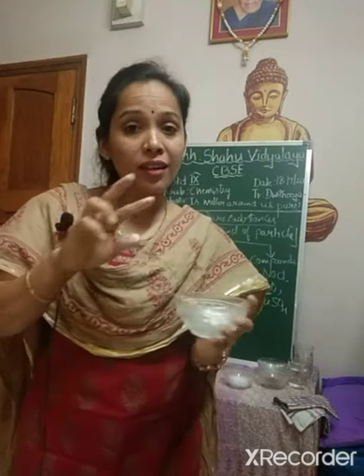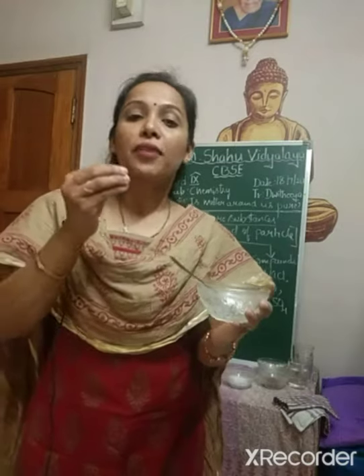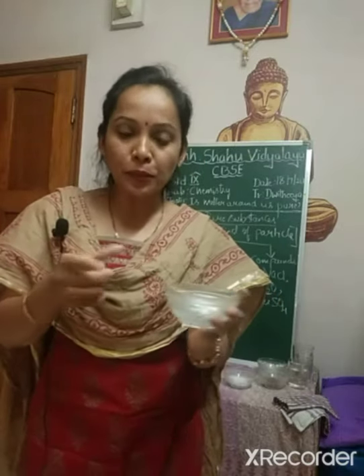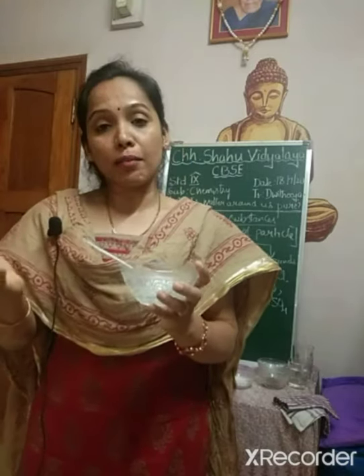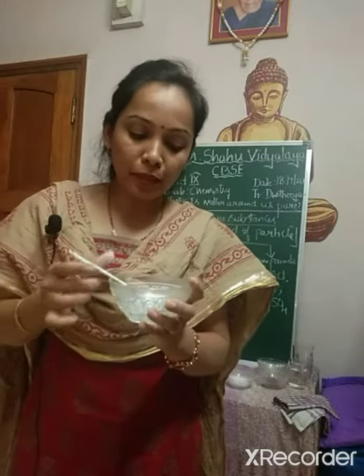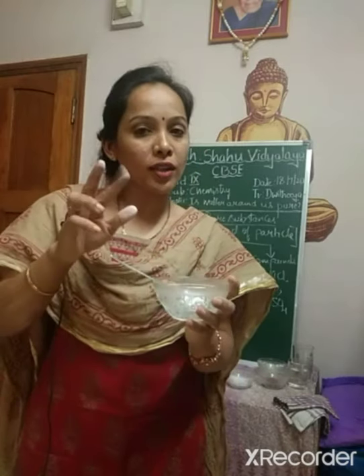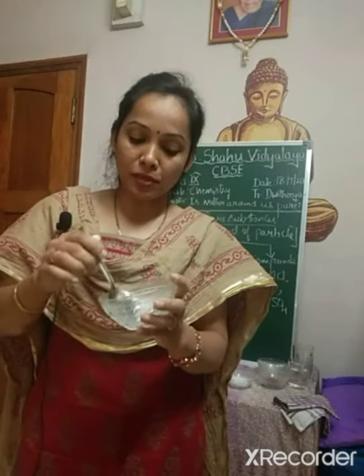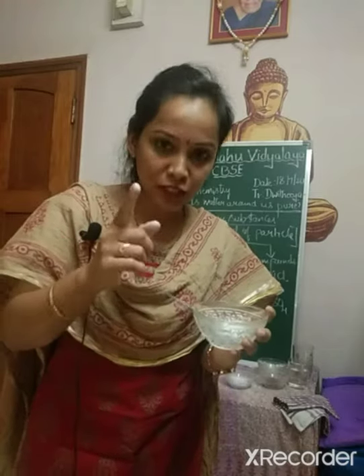So if you mix two elements or two compounds — in general, if we mix two or more pure substances in any proportion, it may be one spoon of this, two spoons of this, one gram, two grams, three grams — whatever, that becomes a mixture. It may be a mixture of elements, compounds, or an element and a compound. It is called a mixture.